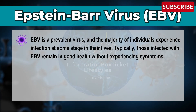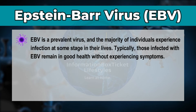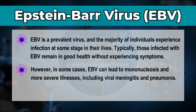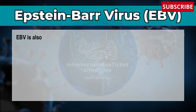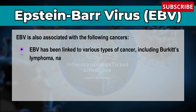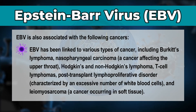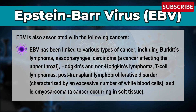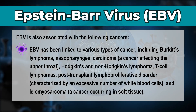Epstein-Barr virus is a prevalent virus, and the majority of individuals experience infection at some stage in their lives. Typically, those infected remain in good health without symptoms. However, in some cases this virus can lead to mononucleosis and more severe illnesses including viral meningitis and pneumonia. Epstein-Barr virus is also associated with various cancers, including Burkitt's lymphoma, nasopharyngeal carcinoma, Hodgkin's and non-Hodgkin's lymphoma, T-cell lymphomas, post-transplant lymphoproliferative disorder, and leiomyosarcoma, a cancer occurring in soft tissue.